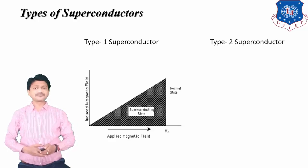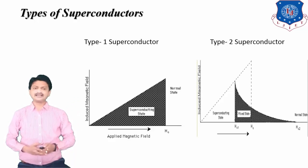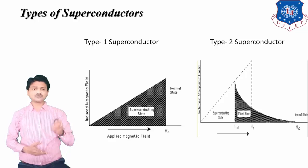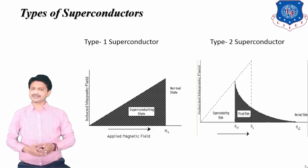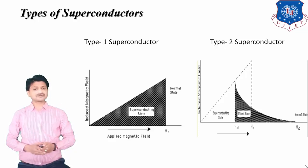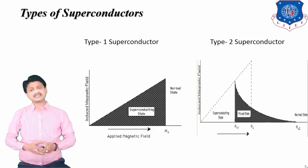Now let's move to the Type 2 superconductor. As you can see in the figure, there are two critical magnetic fields: Hc1 and Hc2. Hc1 is the lower critical magnetic field and Hc2 is the upper critical magnetic field. If the magnetic field value is less than Hc1, the material is in the superconducting state. If greater than Hc2, it returns to normal state. The state between Hc1 and Hc2 is known as the mixed state.